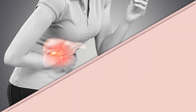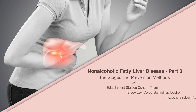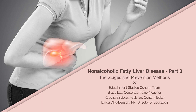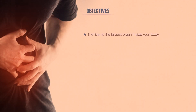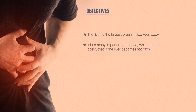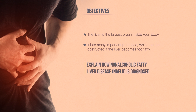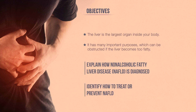Edutainment Studios welcomes you to Non-Alcoholic Fatty Liver Disease – The Stages and Prevention Methods. This module is part 3 of a 3-part series. The liver is the largest organ inside your body. It has many important purposes, which can be obstructed if the liver becomes too fatty. In this course, the objective is to help you explain how Non-Alcoholic Fatty Liver Disease is diagnosed and identify how to treat or prevent NAFLD.